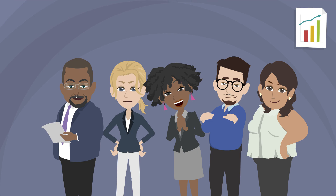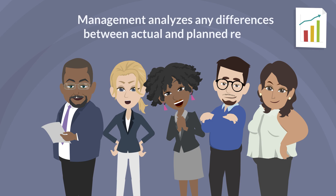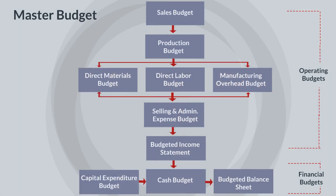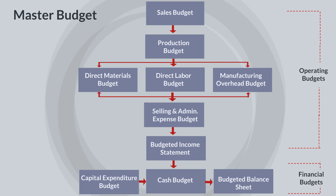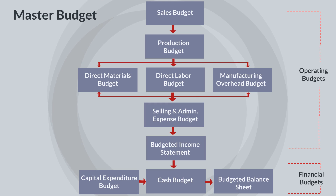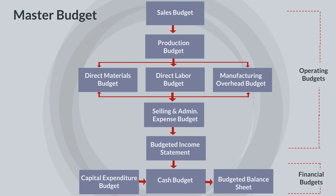From these reports, management analyzes any differences between actual and planned results. The master budget formalizes management's planned objectives for the coming year. These budgets are prepared before a period begins and are only valid for the planned level of activity. These budgets are considered to be static or fixed.